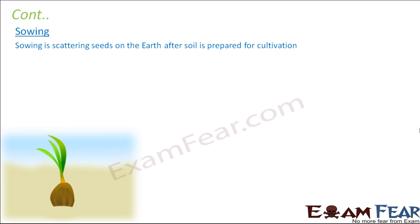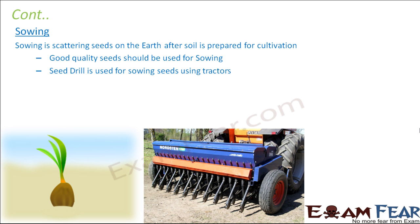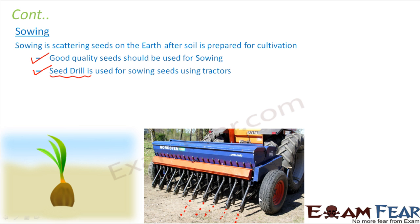Sowing is done once soil preparation is complete. Seeds are scattered on the prepared soil, and only good quality seeds should be used, since poor quality seeds reduce crop productivity. Instead of doing this manually, a machine called a seed drill is often used. It sows seeds uniformly and faster with no human labor, and the setup is attached to a tractor.